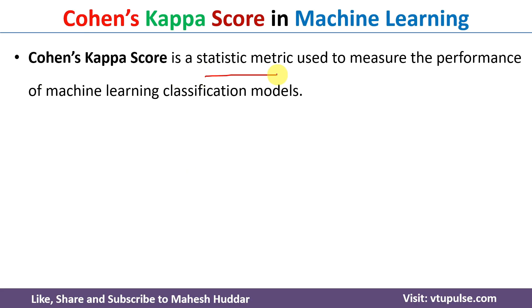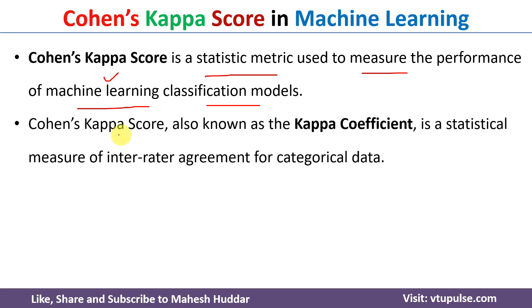Cohen's kappa score is a statistic metric used to measure the performance of a machine learning classification model. When solving a classification problem, there are multiple metrics available like accuracy, precision, recall, F1 score, and so on — we have discussed those in previous videos. Cohen's kappa score is another such metric, also known as kappa's coefficient.